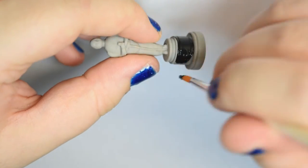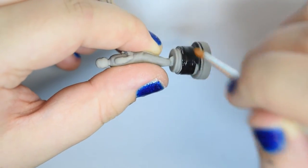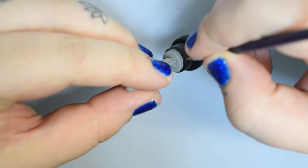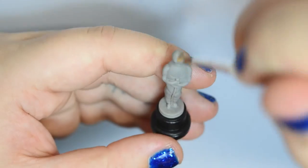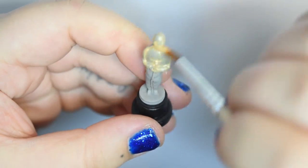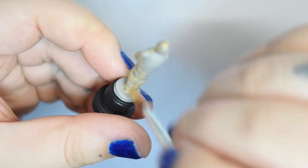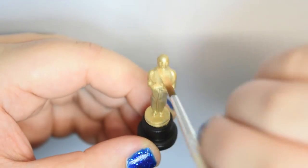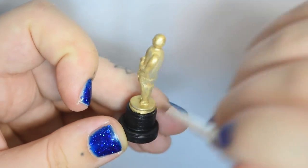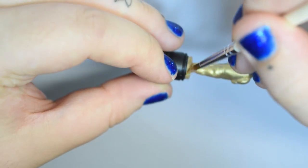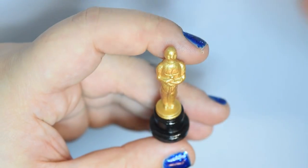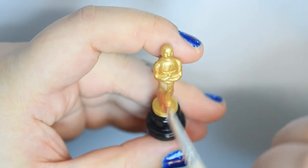After baking, I painted my mini Oscar with acrylics. Dopo la cottura, ho dipinto il mio mini Oscar con gli acrilici. Finally, I polished everything. Infine, ho lucidato il tutto.